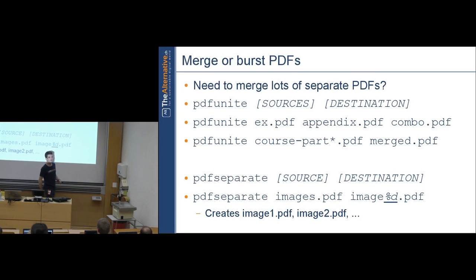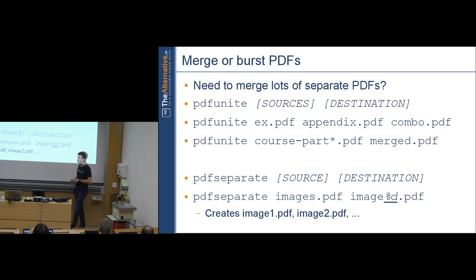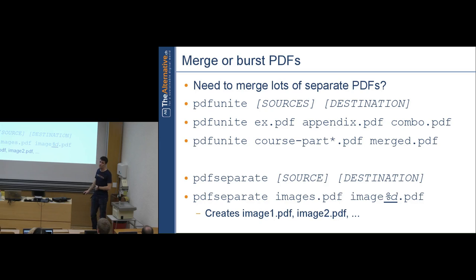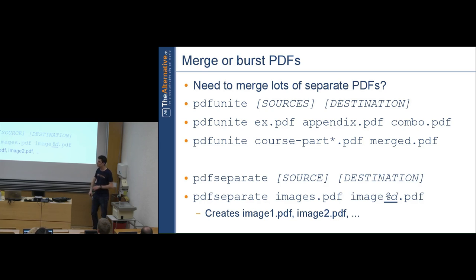pdfseparate takes one input file and creates multiple output files — one per page. The '%d' in the output filename is substituted by the page number, so 'pdfseparate images.pdf image%d.pdf' creates image1.pdf, image2.pdf, etc. You can place the '%d' wherever you like in the filename.